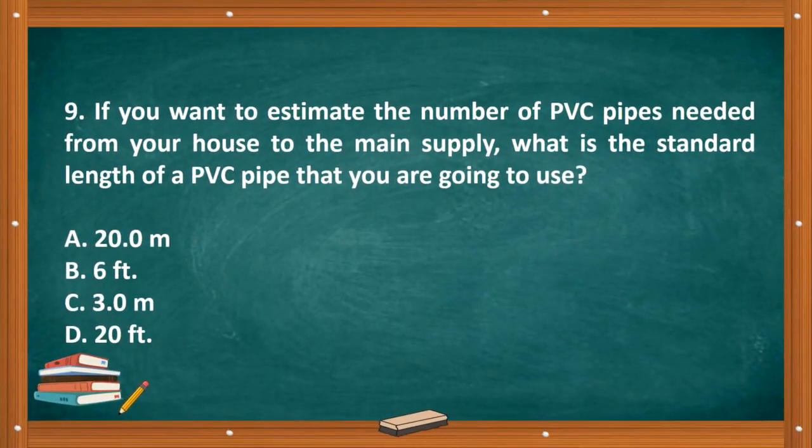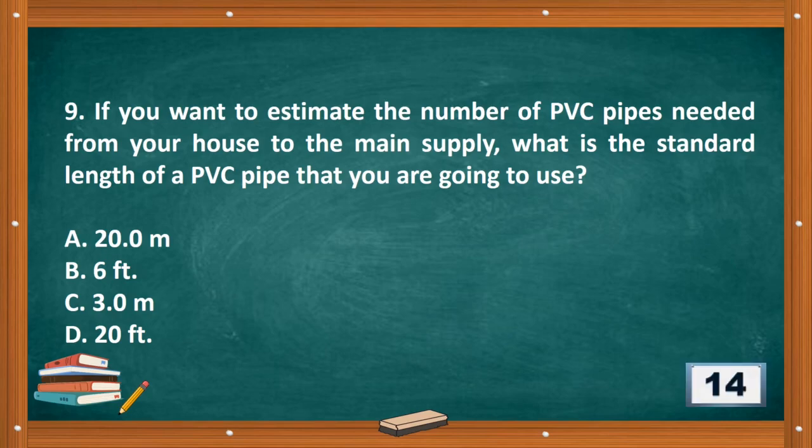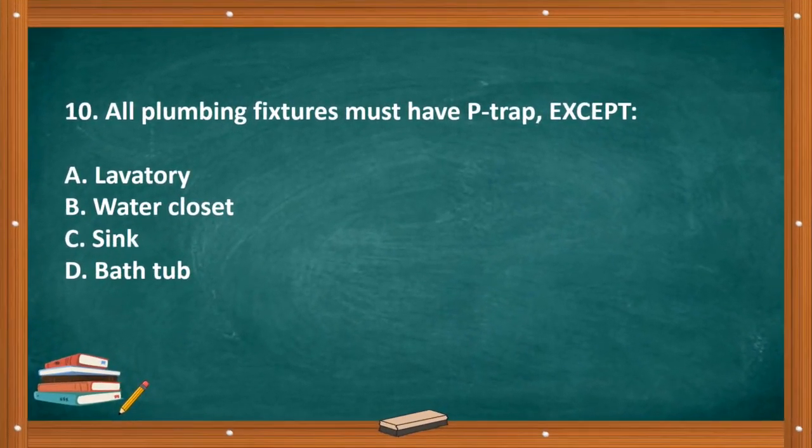Question number nine: If you want to estimate the number of PVC pipes needed from your house to the main supply, what is the standard length of a PVC pipe that you are going to use? A. 20.0 m, B. 6 feet, C. 3.0 m, D. 20 feet.